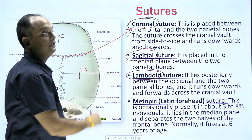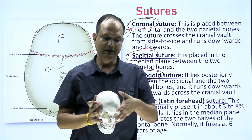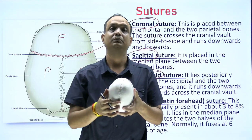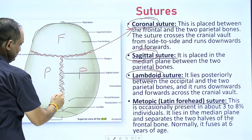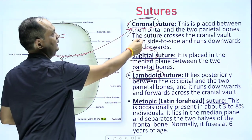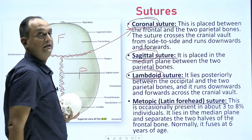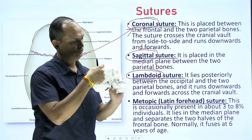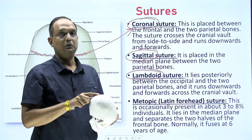What is the sagittal suture? This is the midline plane known as the sagittal plane. In this plane you will find a suture between the two parietal bones, and that is known as the sagittal suture. The coronal suture crosses the cranial wall from side to side and runs downwards and forward. The sagittal suture is between the two parietal bones.